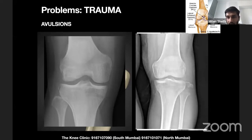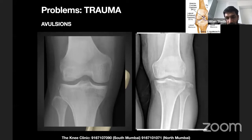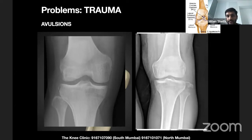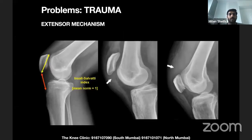There's also a reverse Segond fracture — a chip from the medial tibial plateau — representing a different injury pattern. The key message is that avulsions don't only mean cruciates coming off the tibia centrally. You must look at the rims: the fibular head, the lateral tibial plateau, and the medial tibial plateau for any bone chips.